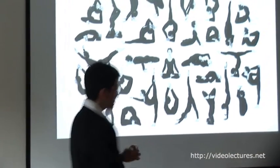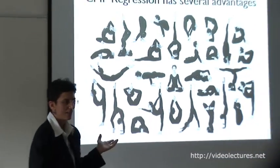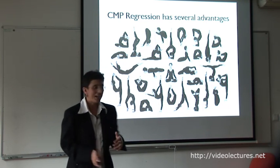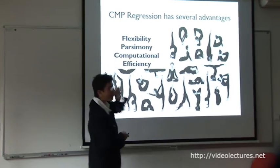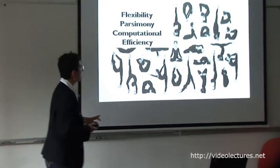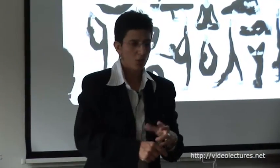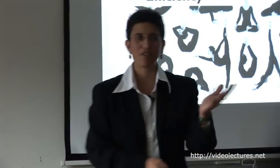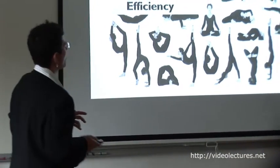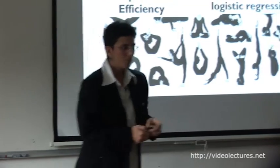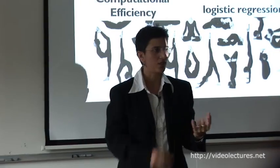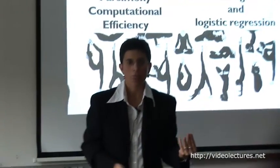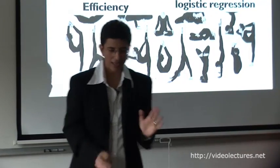To wrap up: the COM-Poisson has many advantages — I'm admittedly biased having worked with it for a long time. It's very flexible, parsimonious with just two parameters, and computationally efficient compared to running Bayesian MCMC. You do need to handle the Z function, but that's manageable. It's useful because it generalizes popular cases people already know: logistic regression, Poisson regression, geometric, and Bernoulli distributions. All papers are available on my website.